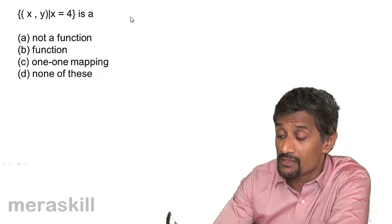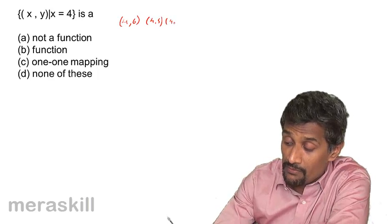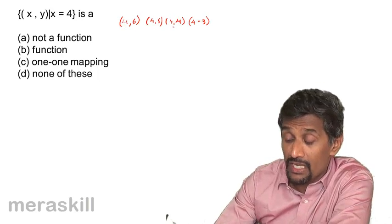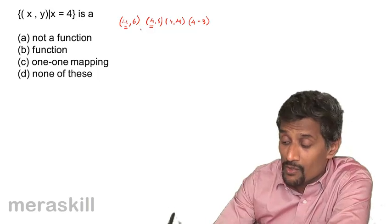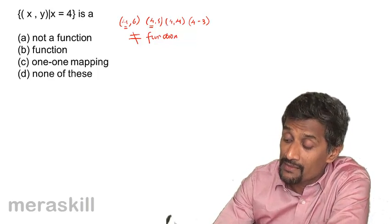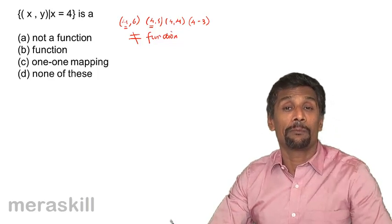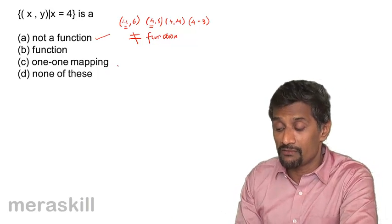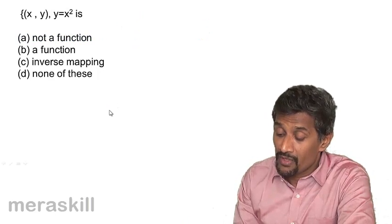Now consider x comma y where x equals 4. If we list these, we have 4 comma 5, 4 comma 4, and so on — the value of x remains the same. There are at least two ordered pairs in which the first term is the same, so it is not a function. It could be a relationship but not a function, because the first member of each ordered pair remains the same. It is also not a one-one mapping.